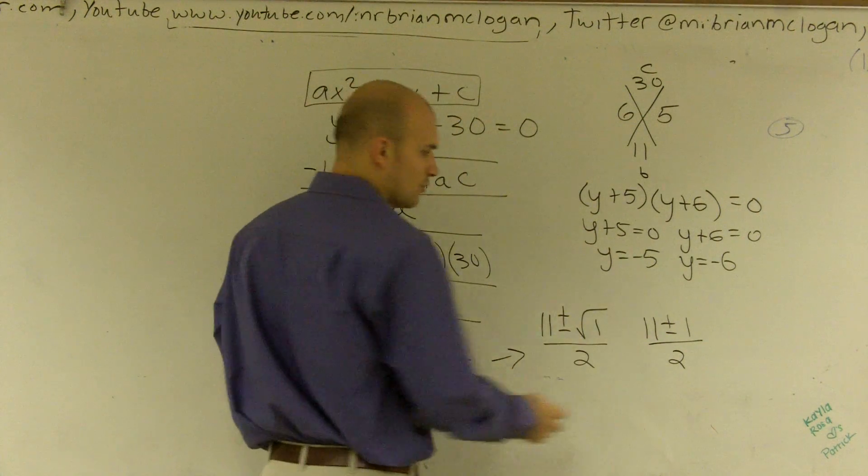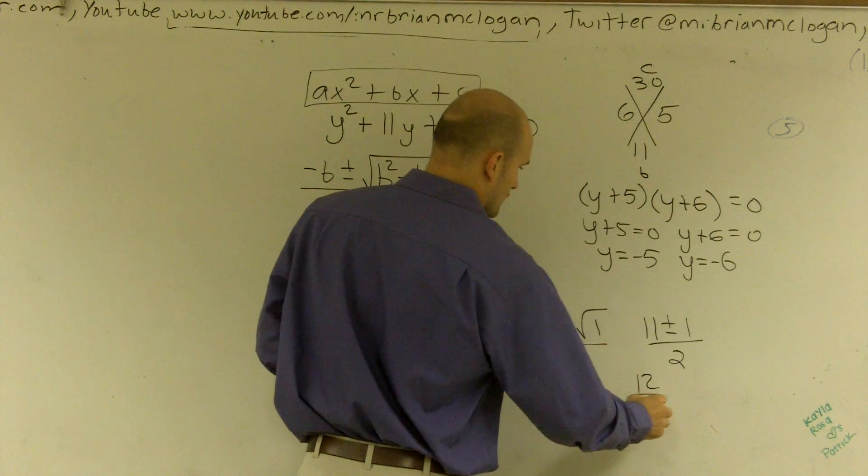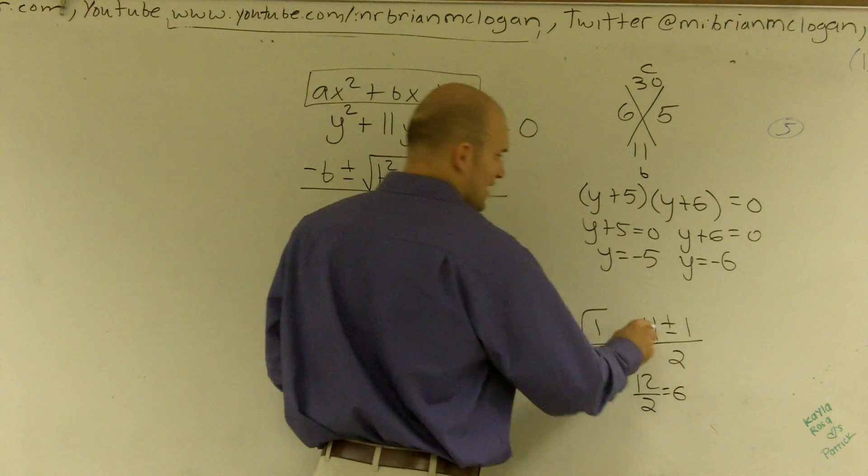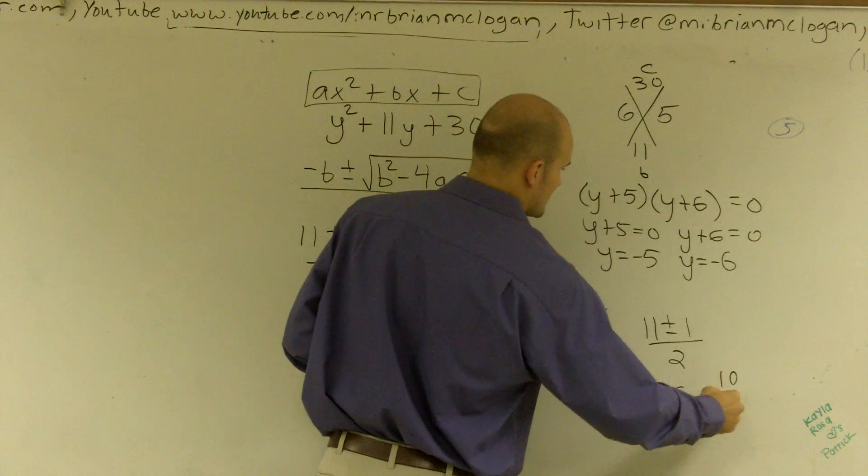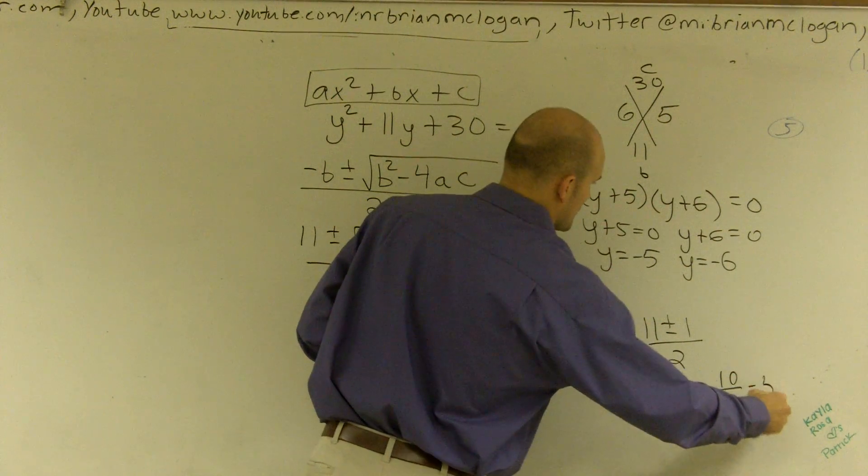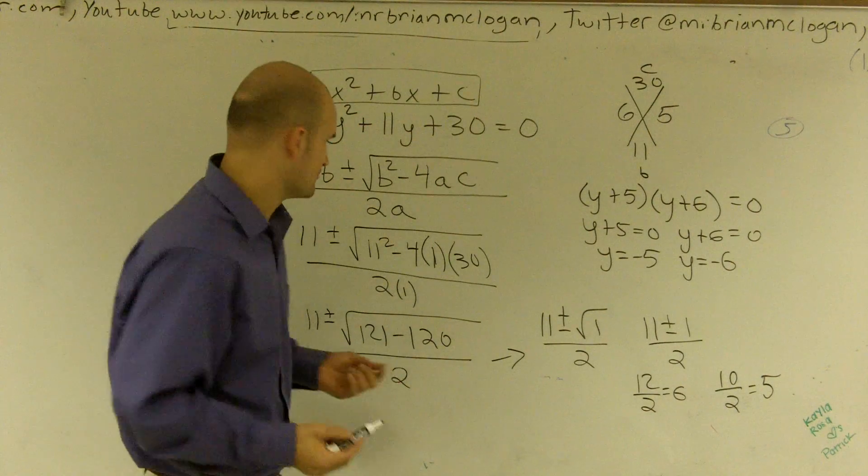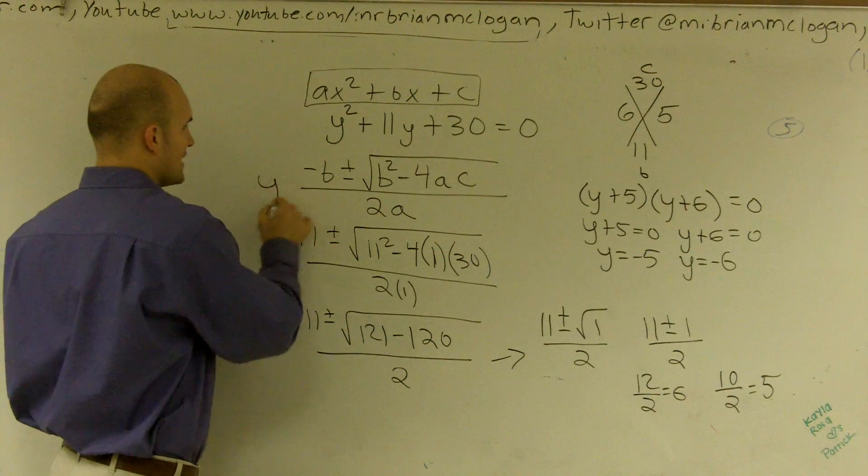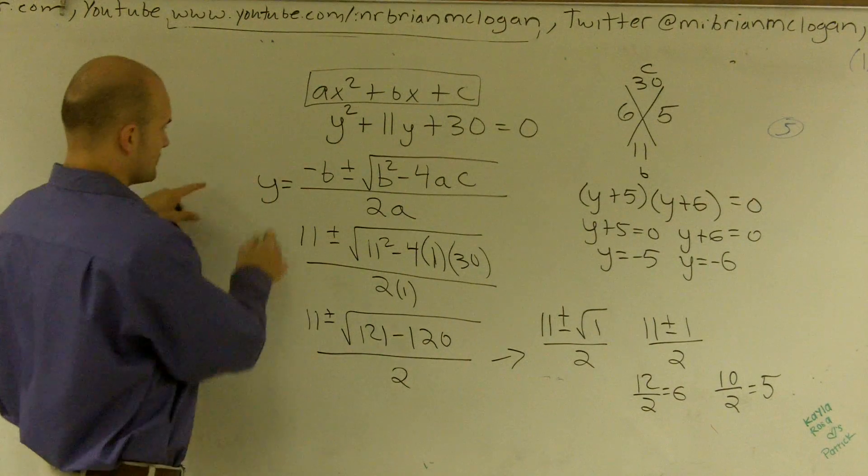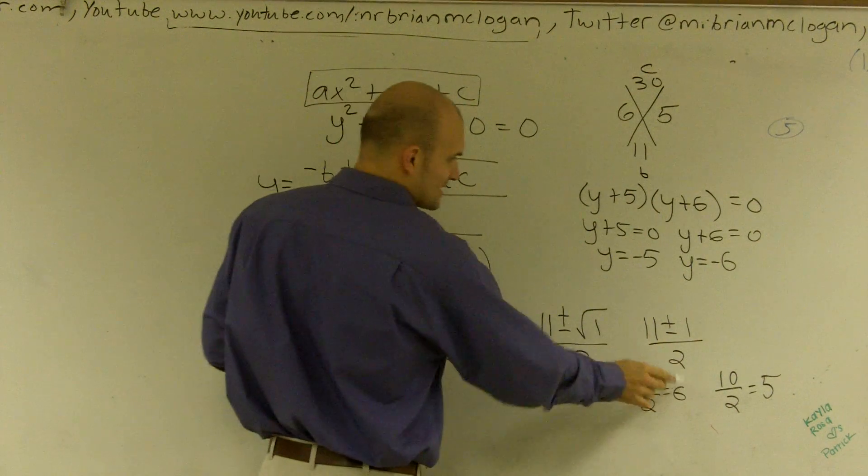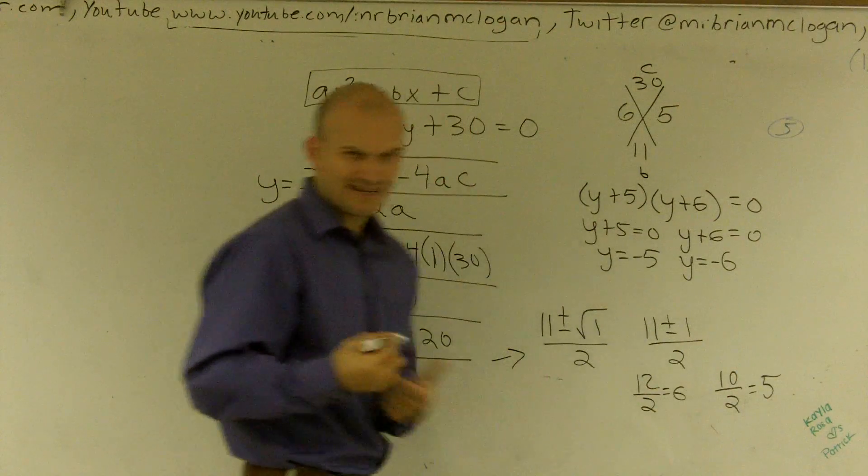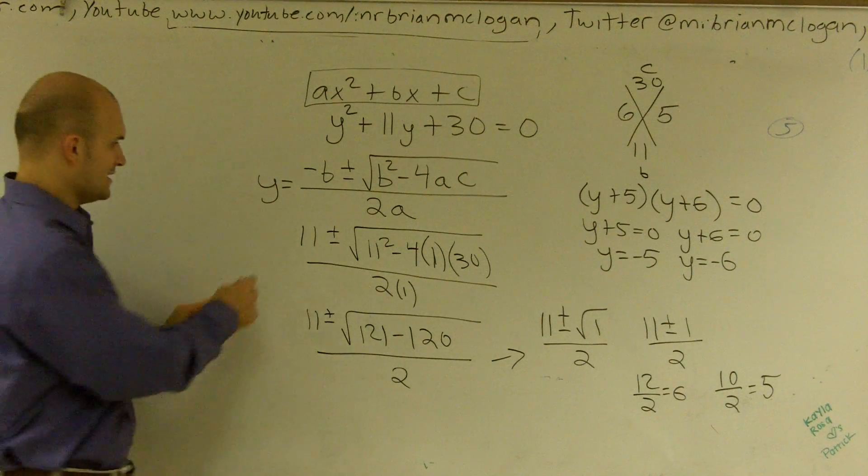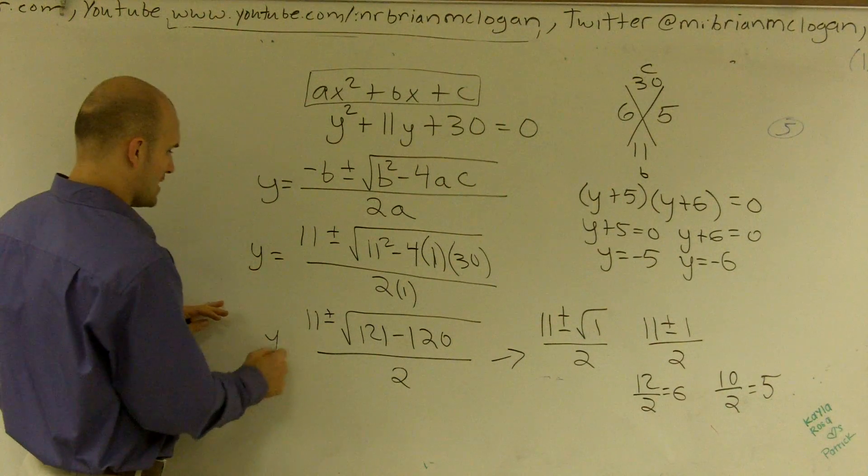So I have 11 plus or minus 1 over 2. Well, 11 plus 1 is 12. 12 over 2 is equal to 6. And 11 minus 1 is 10. 10 over 2 is equal to 5. And really, this whole equation is going to be what your y equals. So really, y equals 6 and y equals 5. I just did a poor job of keeping each one of these values equal to y.